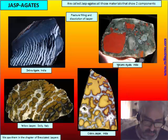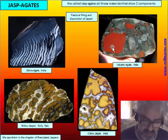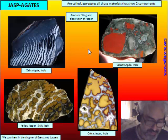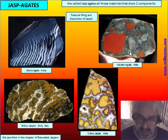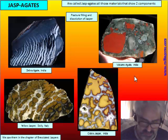As a generic term, we can call jasperagate any material that has two components — some stuff that has a clear jasper area but also some kind of transparent material that is chalcedony. Depending on the person, it can be called agate or jasper. This is not referring to a generic term but is a descriptive term for jasperagate.